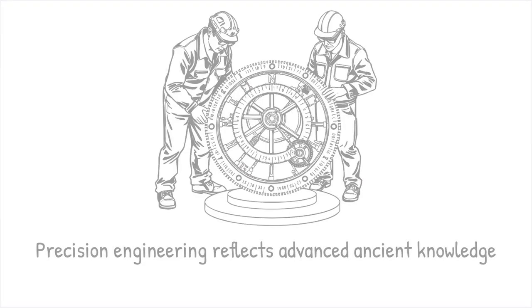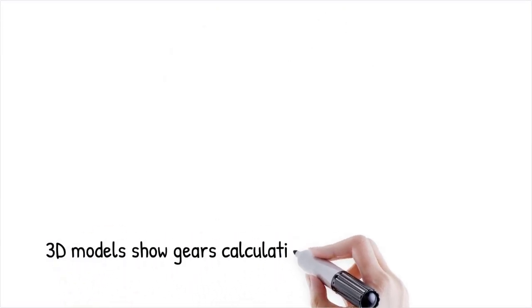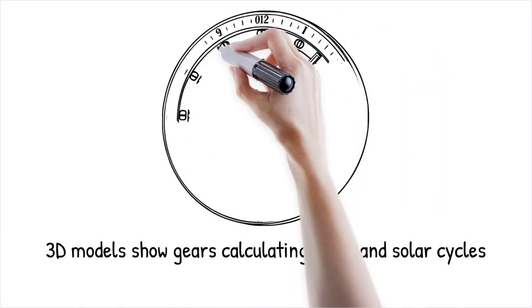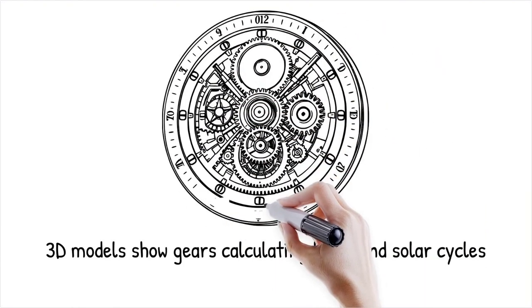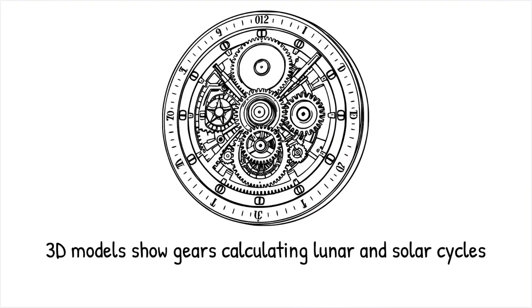Modern engineers have recreated 3D models of the mechanism, showing how the gears interlock to calculate lunar and solar cycles. It's like examining the intricate gear system in a modern mechanical watch. Every small component plays a vital role in keeping accurate time.